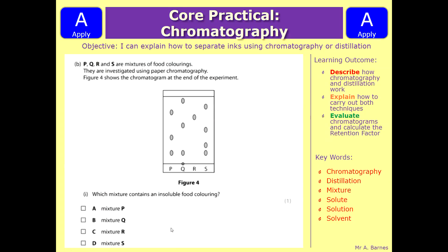Next question: you've got mixtures P, Q, R, and S of food colourings investigated using paper chromatography, and figure 4 shows the chromatogram at the end of the experiment. Which mixture contains an insoluble food colouring? If it's insoluble it will not dissolve and will not move up the paper, so you look for the one that's still on your original line — in this case mixture Q. Although some of it is soluble, not all of it is, which is what you can see there.